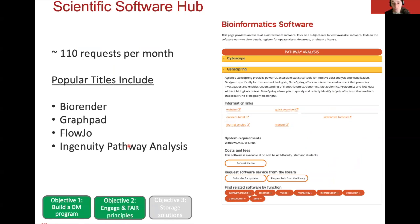Researchers need scientific software to perform their analysis, so the Scientific Software Hub was created with the spirit of saving money by accumulating and aggregating all license requests for specific softwares, giving us more leverage to negotiate with vendors. We are now provisioning about 40 different softwares to both our campuses in Ithaca and NYC. Our most popular titles include BioRender, GraphPad, FlowJo, and Ingenuity Pathway Analysis. So far, we have about 110 requests per month, and it keeps increasing as we provision more licensed softwares.